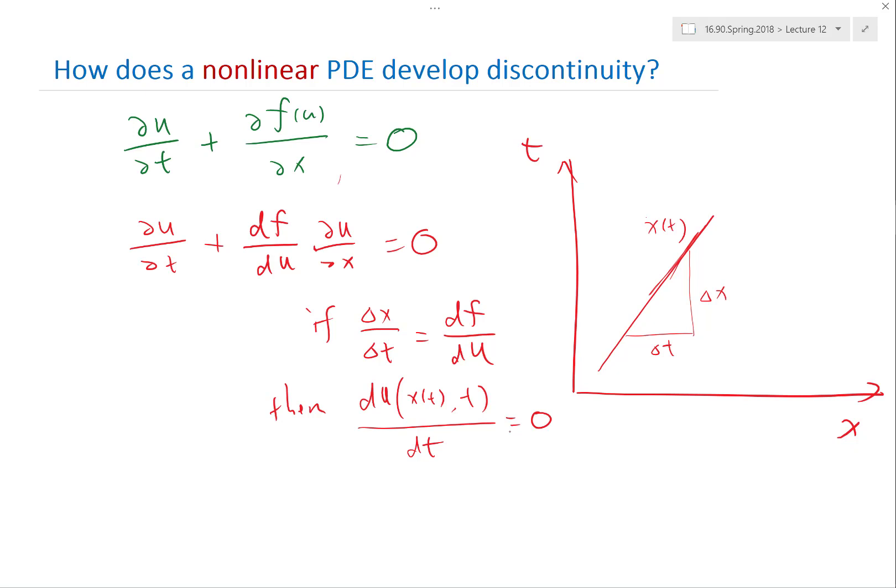For a nonlinear differential equation, nonlinear means F, the flux, is no longer a linear function of u. Think of the traffic equation case: u is the density of cars, and the flux being a nonlinear function of u simply means velocity is not constant — not every car drives at the same speed. In a highway, the more packed the cars are, the slower they drive, giving you nonlinearities. And dF/du is not a constant when F is nonlinear.